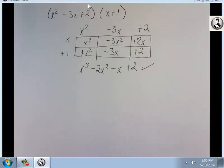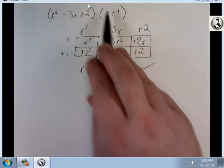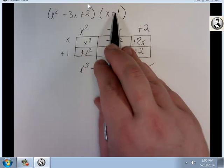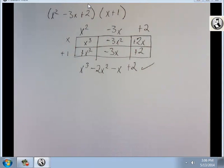Basically the reason why this works is what you're doing is you're distributing the x across everything here, and then you're distributing the plus 1 across everything here. As long as everything in the first polynomial multiplies by everything in the second polynomial, you're fine. This is just a way to help you keep track of your work. So I'm going to give you one more.